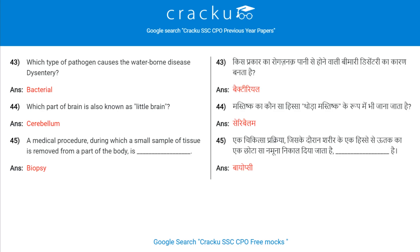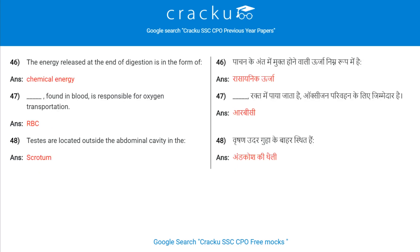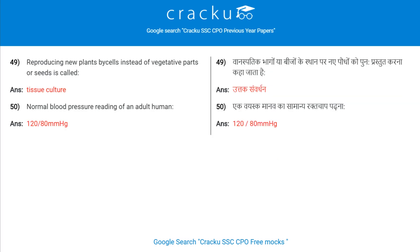A medical procedure during which a small sample of tissue is removed from a part of your body is called a biopsy. The energy released at the end of digestion is in the form of chemical energy. Dash found in blood is responsible for oxygen transportation — Red blood cells. Testes are located outside the abdominal cavity in the scrotum. Reproducing new plants using cells instead of vegetative parts or seeds is called tissue culture. The normal blood pressure reading of an adult human is 120/80 mmHg.